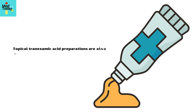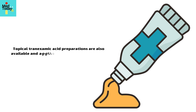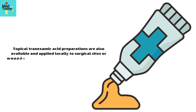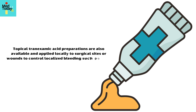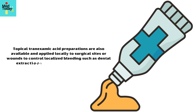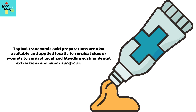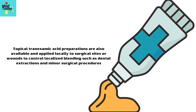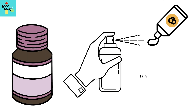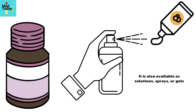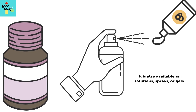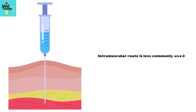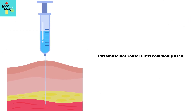Topical tranexamic acid preparations are also available and applied locally to surgical sites or wounds to control localized bleeding, such as dental extractions and minor surgical procedures. It is available as solutions, sprays, or gels. The intramuscular route is less commonly used.